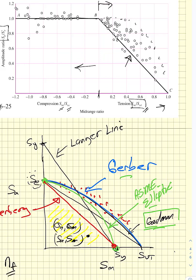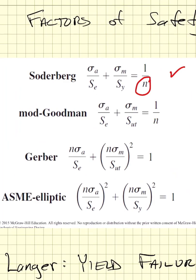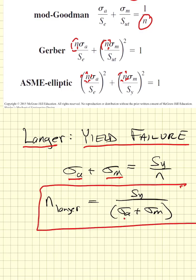We want to find fatigue factors of safety N_f for each of these lines. Equations 6-45 through 6-48 give the Soderbergh equation with its factor of safety N, the Goodman equation with its factor of safety, the Gerber equation where the factor of safety must be extracted, and the ASME elliptic where it's also buried but relatively easy to extract. To prevent yield, we use the Langer criterion: N_yield = S_y / (s_a + s_m).